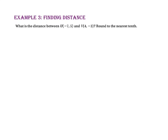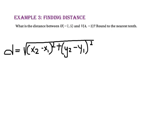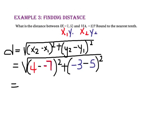Example 3 asks: what is the distance between point U at (negative 7, 5) and point V at (4, negative 3)? Let's round our answer to the nearest tenth. Let's start by writing the distance formula — the more times we write it, the less likely we are to forget it. Now let's identify x₁, y₁ and x₂, y₂, then substitute these values into our distance formula and simplify.